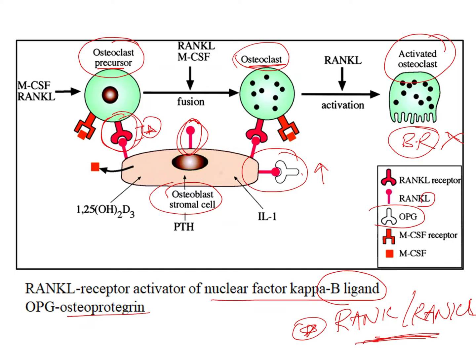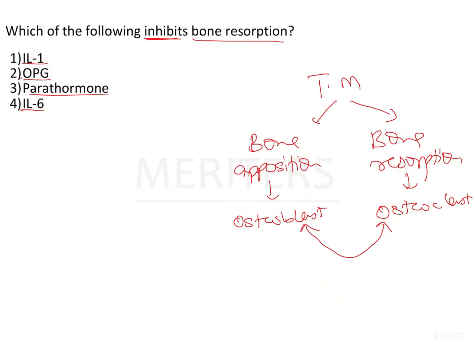OPG prevents the activation of the osteoclast. An increase in OPG is going to reduce or inhibit bone resorption because it prevents the maturation of the osteoclast.